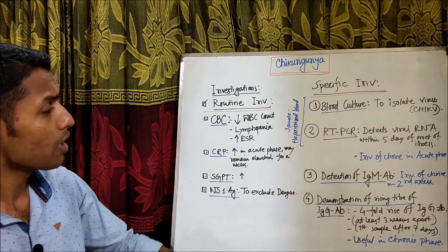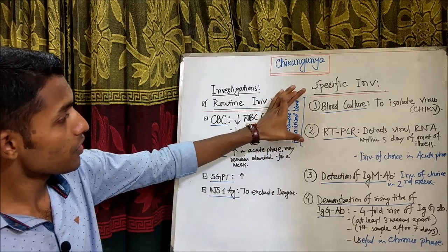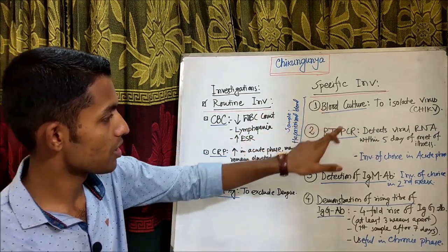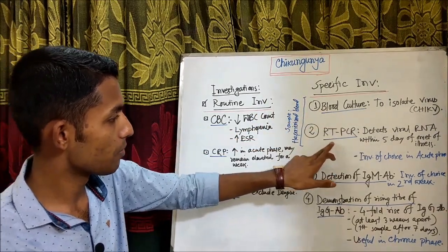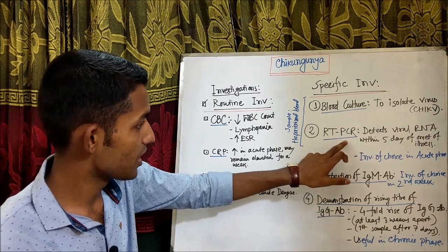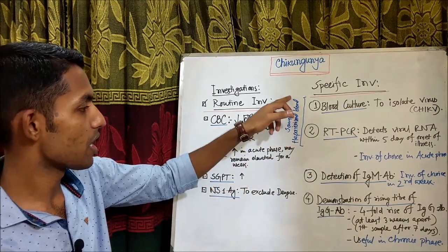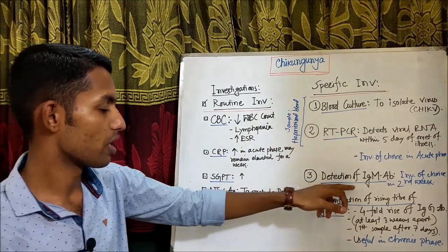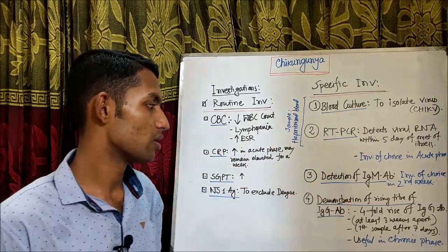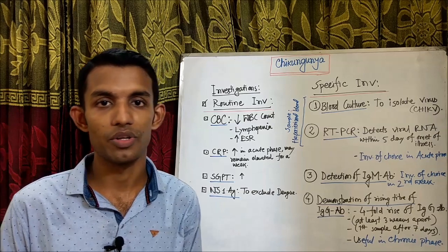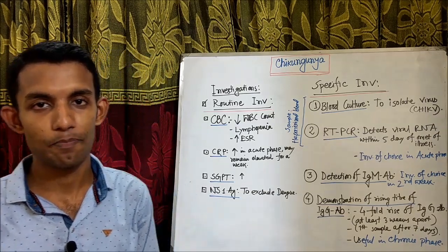For the first two investigations — blood culture and RT-PCR — the sample required is heparinized blood. For immunoglobulin testing, the sample is serum.